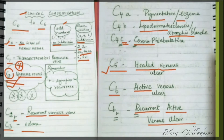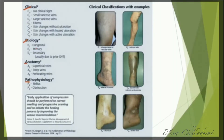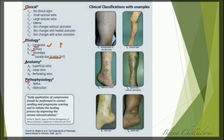Next is the etiological classification. EC signifies congenital, EP signifies primary, ES signifies secondary, and EN means no venous cause identified. So in the etiological classification, we have four subdivisions: EC, EP, ES, and EN.